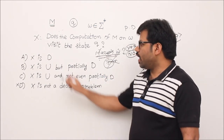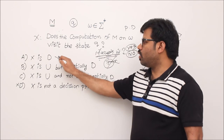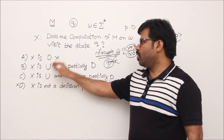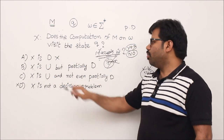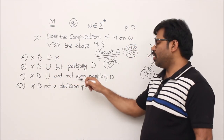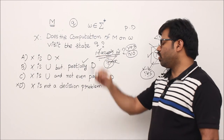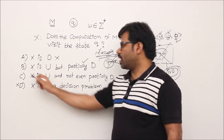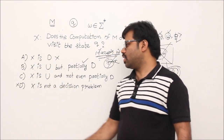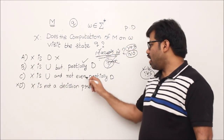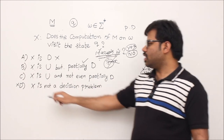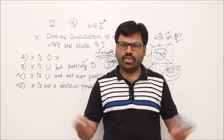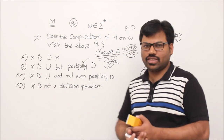Looking at the options: X is decidable — no. X is undecidable but partially decidable — yes, because we showed there is a Turing machine that accepts it, but no total Turing machine. So option B is the right answer. 'Not even partially decidable' is wrong.